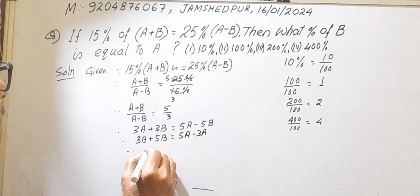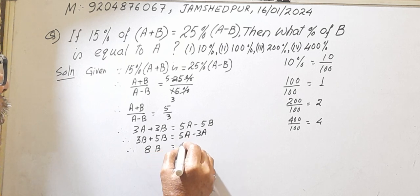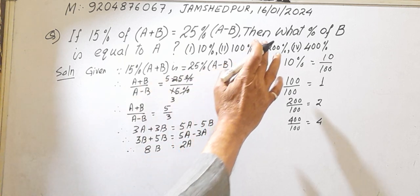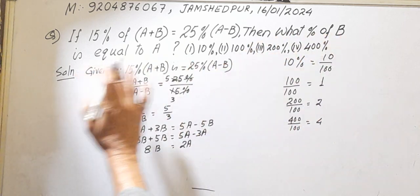Therefore, 8B equal to 2A. Now you see, 8 is 4 times of 2. Therefore, B is 400%.